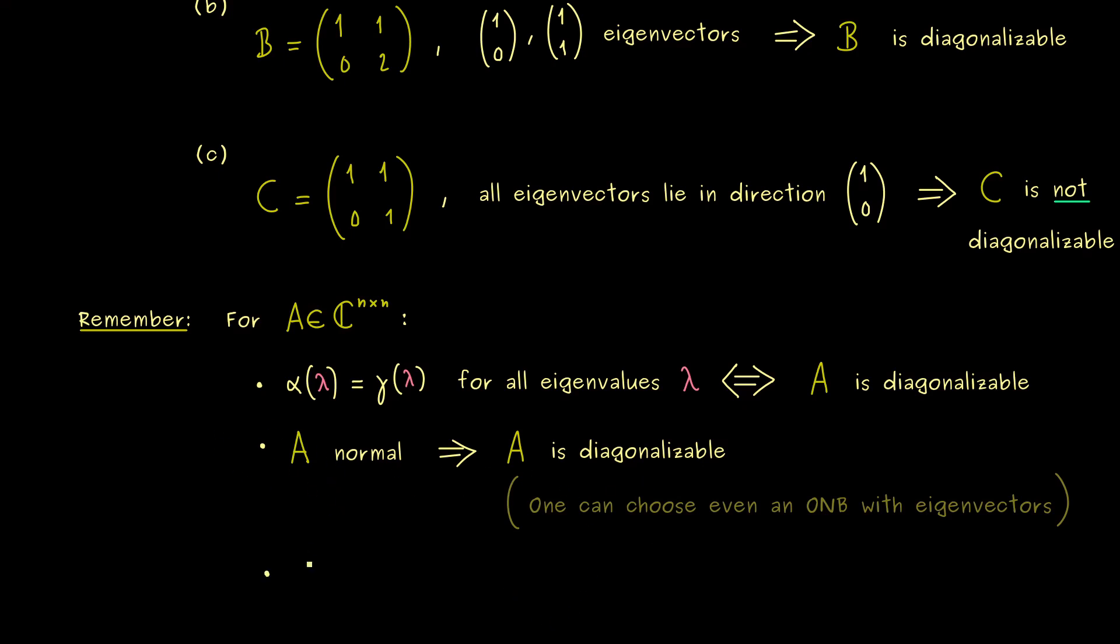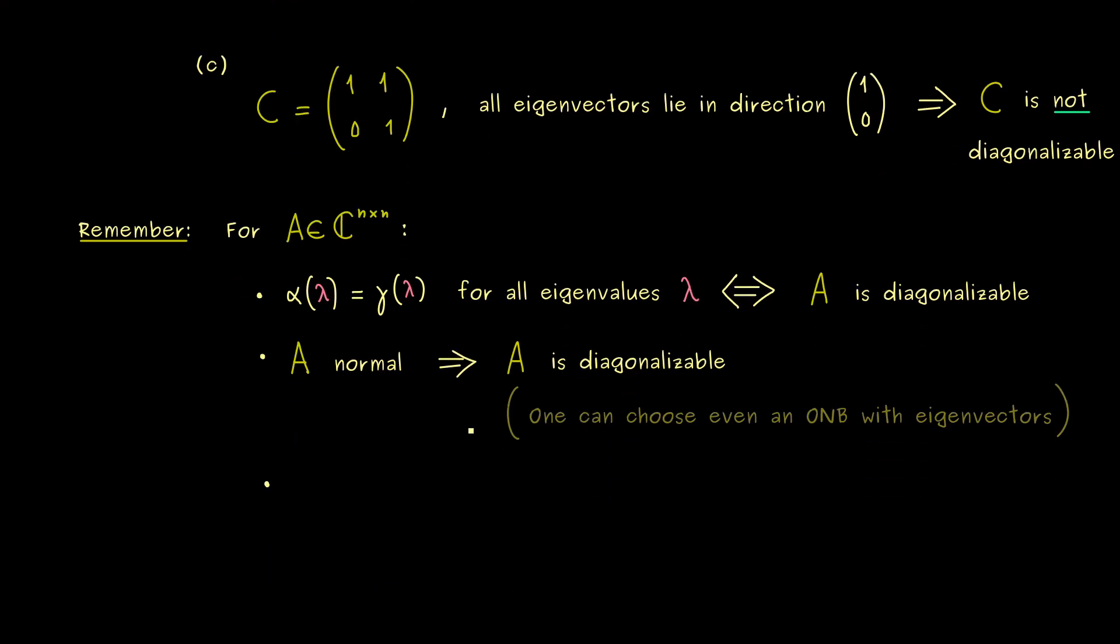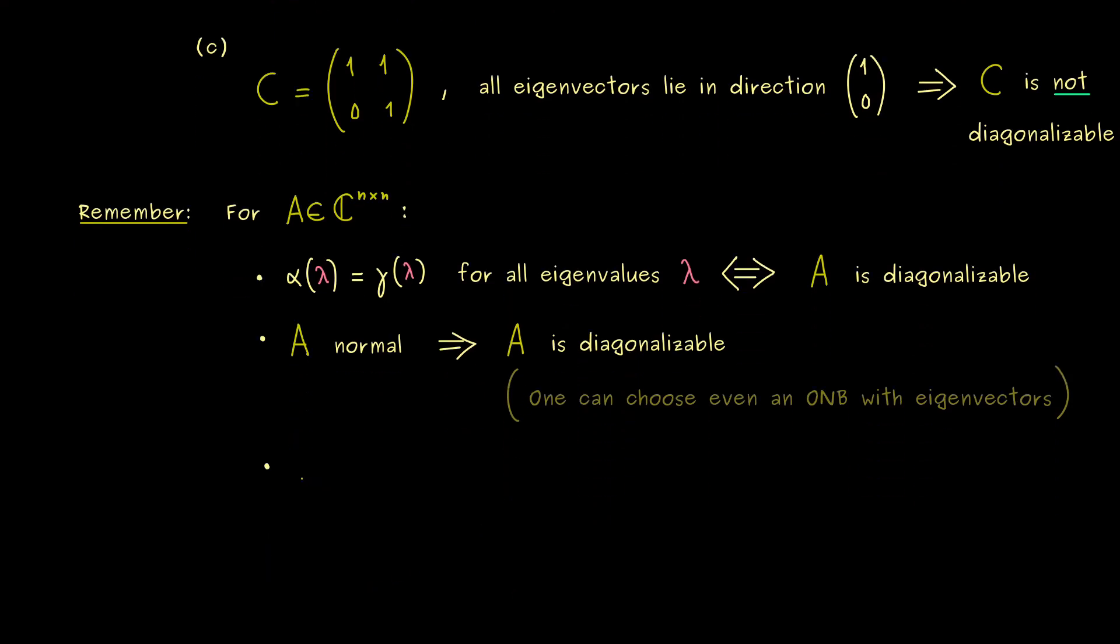Here, let's finish this part by telling you another nice criterion for diagonalizable matrices. This one you can apply every time you find n different eigenvalues. This means that each eigenvalue has algebraic multiplicity of 1. And since the geometric multiplicity is always at least 1 for an eigenvalue, we immediately see we need to have this equality for each eigenvalue.